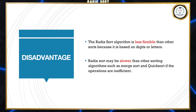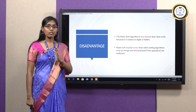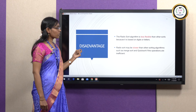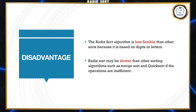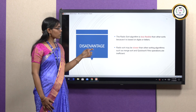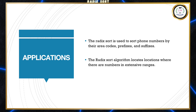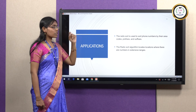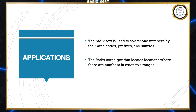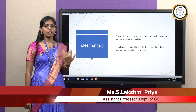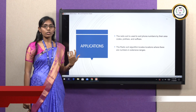A disadvantage is that Radix Sort is less flexible, since it sorts digit by digit — if you have 10-digit numbers, you sort for each digit individually. It is also slower compared to other sorting algorithms because it processes each digit separately. For applications, Radix Sort is useful for sorting phone numbers by area code or specific prefixes and suffixes. It can also be used for locating places based on an extensive range. Mainly it is used in design and analysis of algorithms or data structures in the context of sorting.